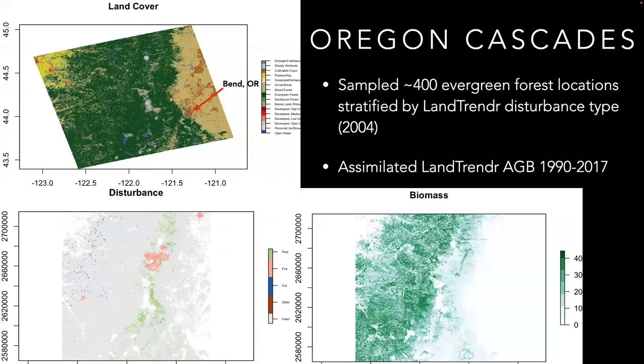Knowing that the underlying algorithms perform well, we next moved on to assimilating real data. In this case, the LandTrender above-ground biomass product for a landscape centered on the Oregon Cascades, which is shown in the bottom right. Specifically, we sampled around 400 locations from within the evergreen forest land cover class, shown in dark green in the top left, stratifying that sample by disturbance type, shown in the bottom left, where green indicates pests, pink fire, blue clear cuts, dark red other disturbances, and gray for undisturbed forests.